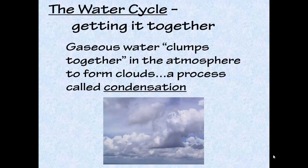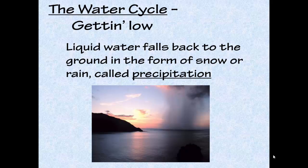That water vapor is going to clump together in the atmosphere to form clouds, in a process called condensation. Condensation is when those gassy water molecules clump together and we get liquid droplets again. Clouds are actually little liquid drops of water sitting on particles of dust, all clumped together up there in the sky. Then that liquid water falls back to the ground as snow or rain — that's called precipitation.